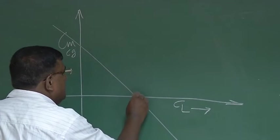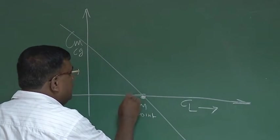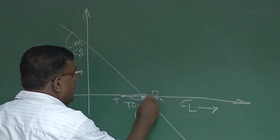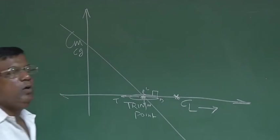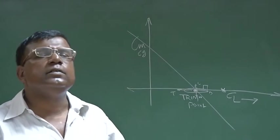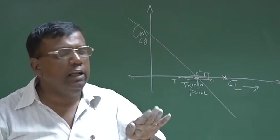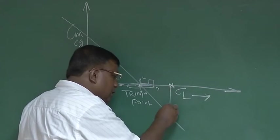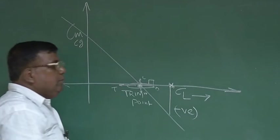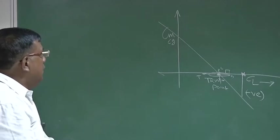Let us say the airplane is flying here and this is the trim point. At this point: thrust equals drag, lift equals weight — the airplane is flying like this. Now there is a requirement that the aircraft should fly at a higher CL, still satisfying lift equals weight, which means it has to fly at a lower speed. So to satisfy the lift equals weight condition at a lower speed, it has to fly at a higher CL or higher angle of attack. The moment you try to come to this point, this airplane will generate a negative pitching moment because it is statically stable — you cannot help it. It will always have an initial tendency to oppose.